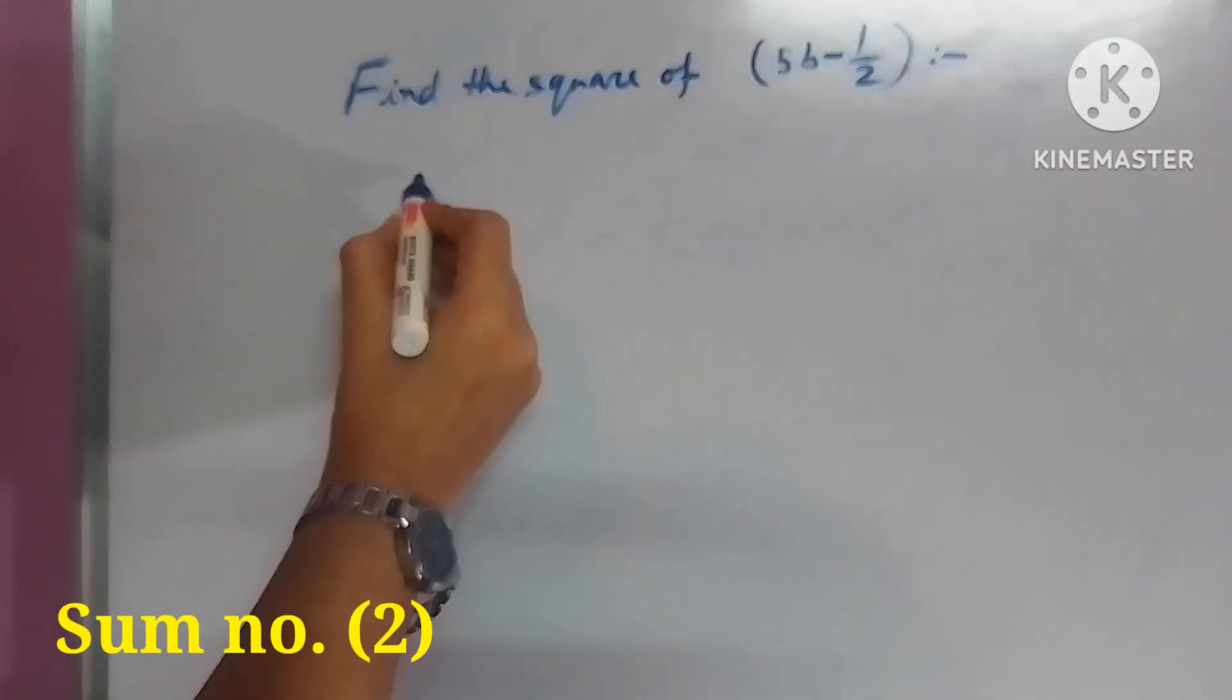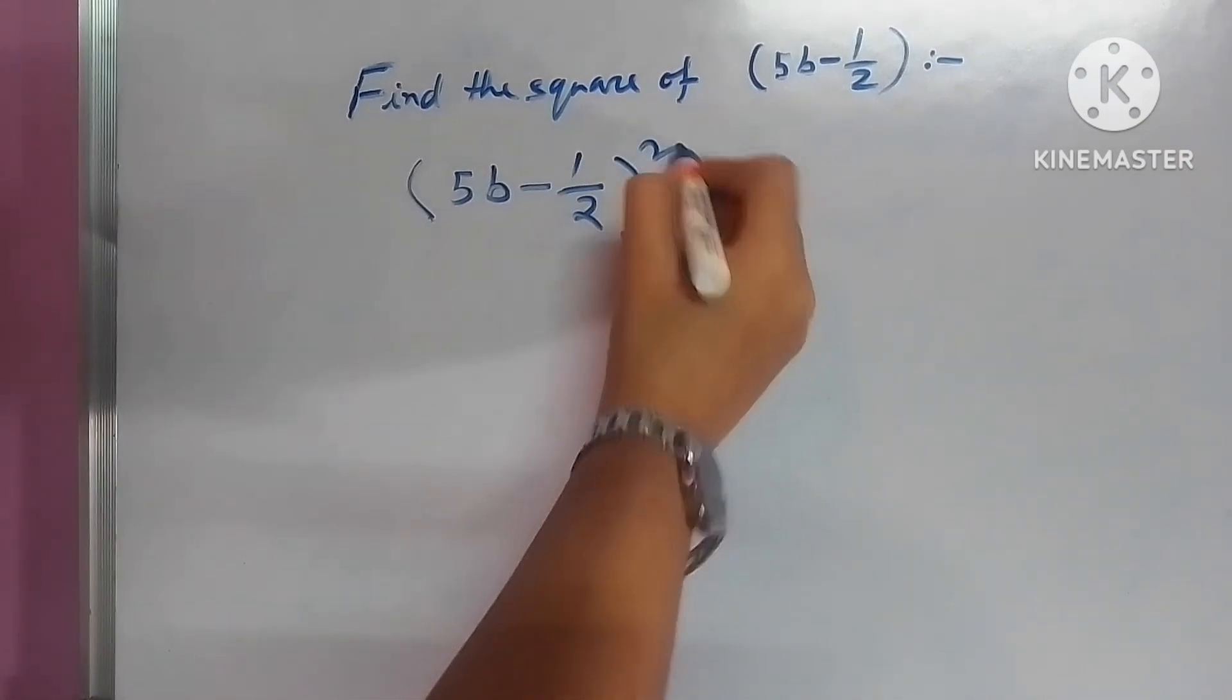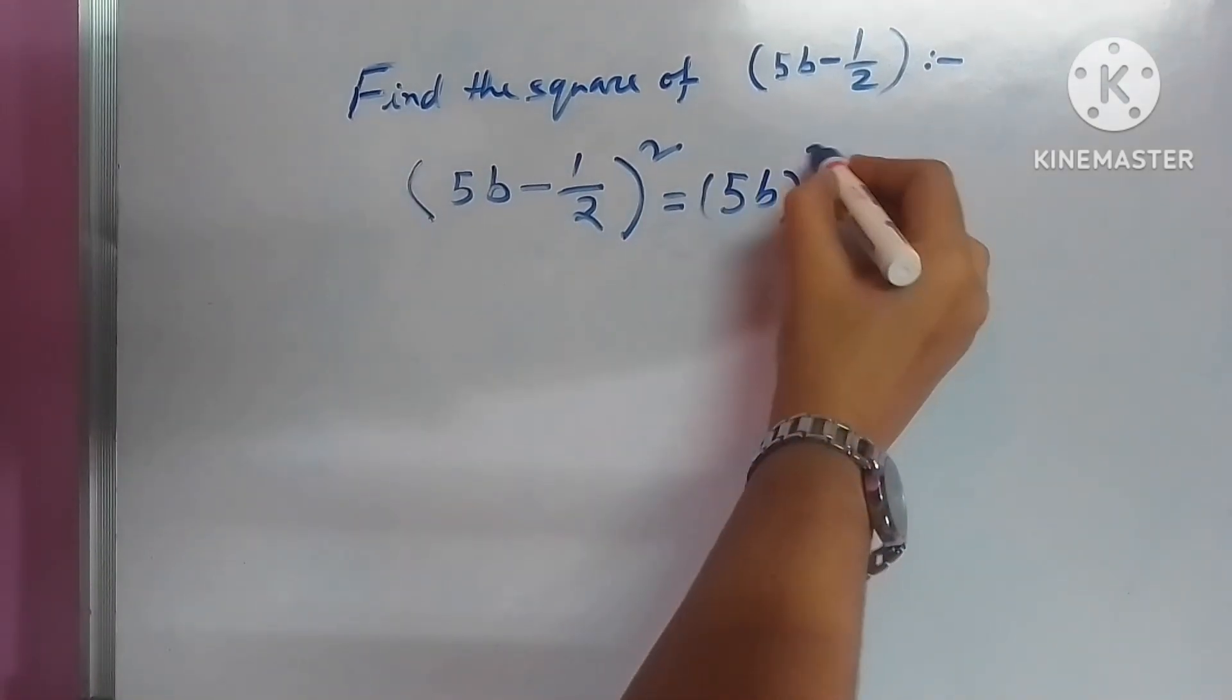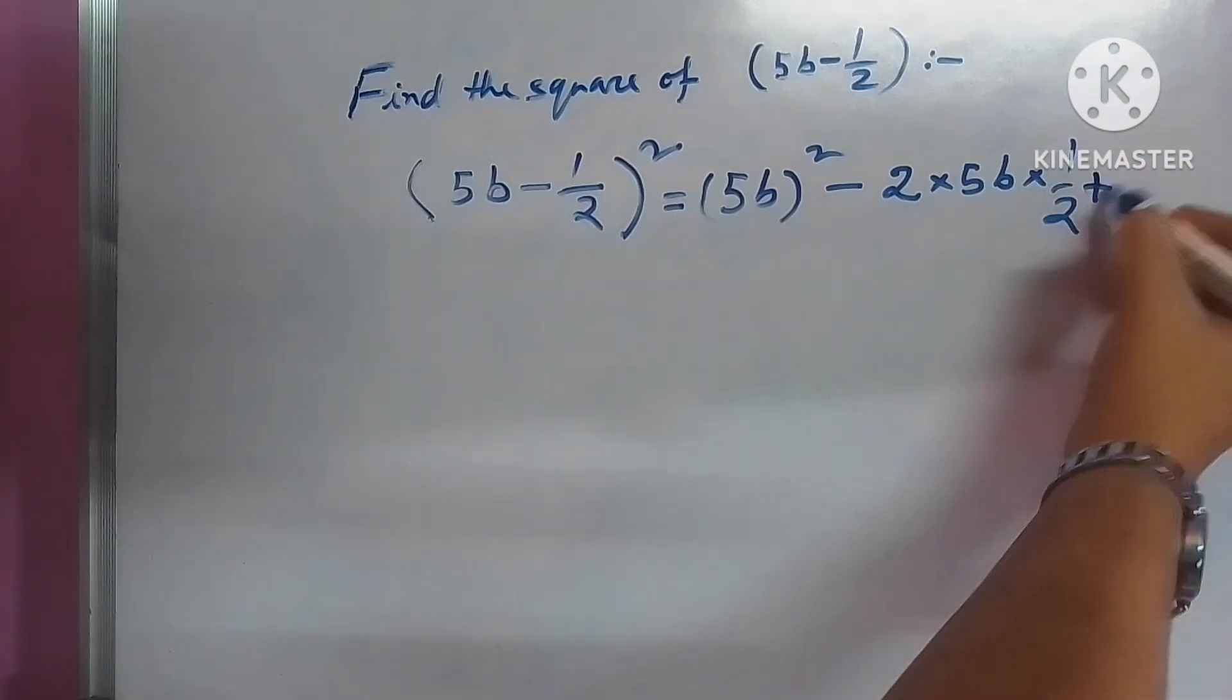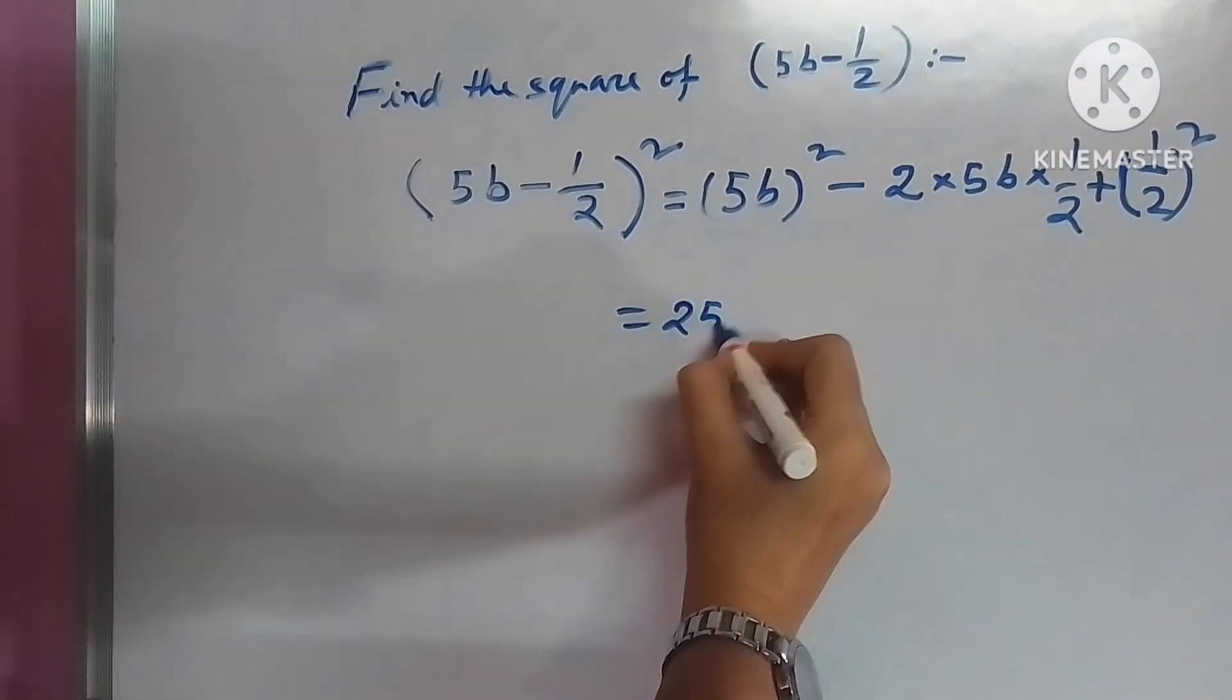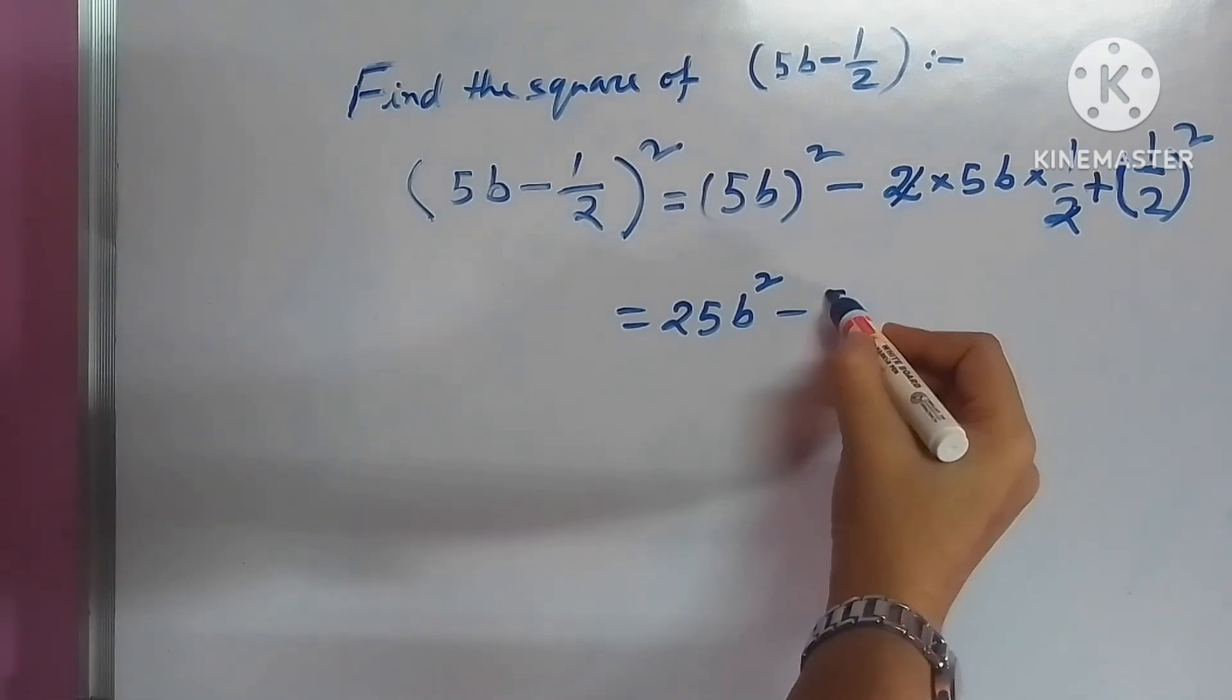In my second example, the sum is find the square of (5b - 1/2). So to find the square, we have to write (5b - 1/2)², which means we will calculate as per Identity 2. After the cancellation, we got the ultimate result: 25b² - 5b + 1/4.